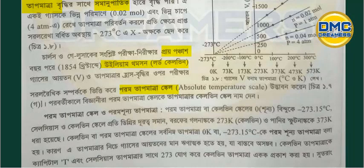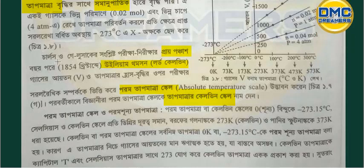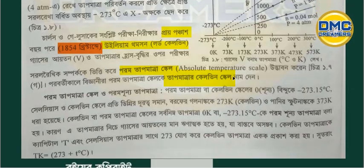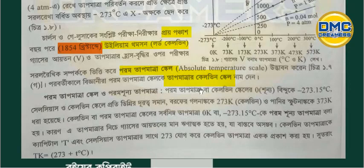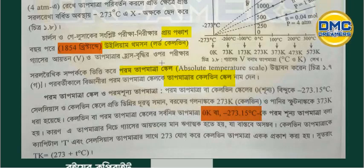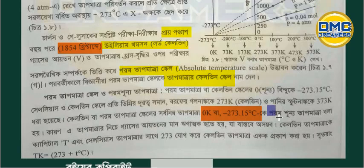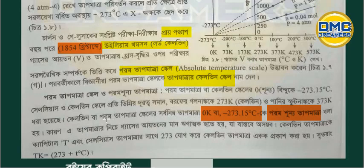How has the Kelvin scale been written? The Kelvin scale has been written — which means 4.0. The Kelvin scale has been written at minus 273.15 degrees Celsius. This path is steady.